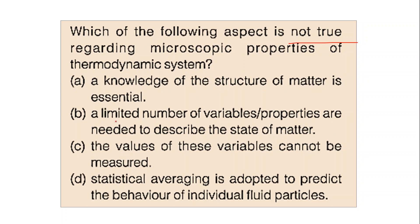Option B — that a limited number of variables and properties are needed — is not true, because we may need as many variables as required in both macroscopic and microscopic cases. There is no bifurcation in terms of number of variables. Option C is true: the value of variables cannot be measured directly and we must use statistical means, unlike in a macroscopic system. Option D is also true: statistical averaging is adopted to predict the behavior of individual particles. Therefore, option B is the correct answer — there is no limitation on the number of variables in microscopic properties.